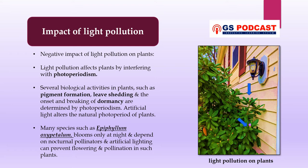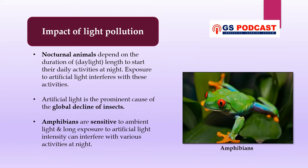Many plant species such as queen of the night and epiphyllum oxypetalum bloom only at night and depend on nocturnal pollinators for pollination. Increasing artificial lighting can prevent flowering and pollination in such plants and hamper reproduction. Animals are also affected by light pollution. Nocturnal animals depend on the duration of daylight length to start their daily activities at night, and exposure to artificial light interferes with these activities, decreasing their chances of finding food and exposing them to predators.